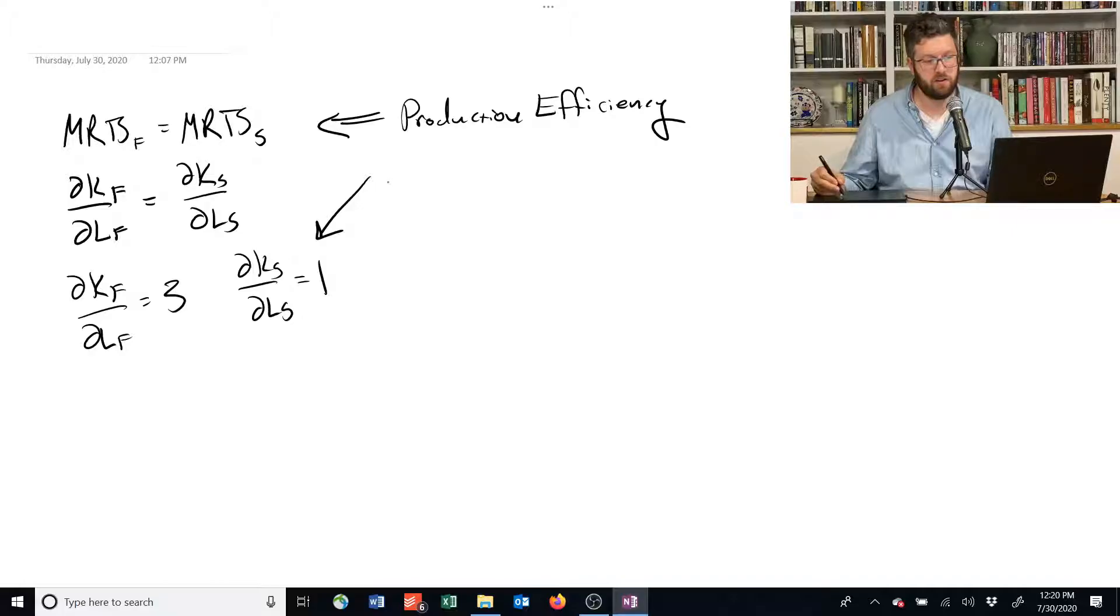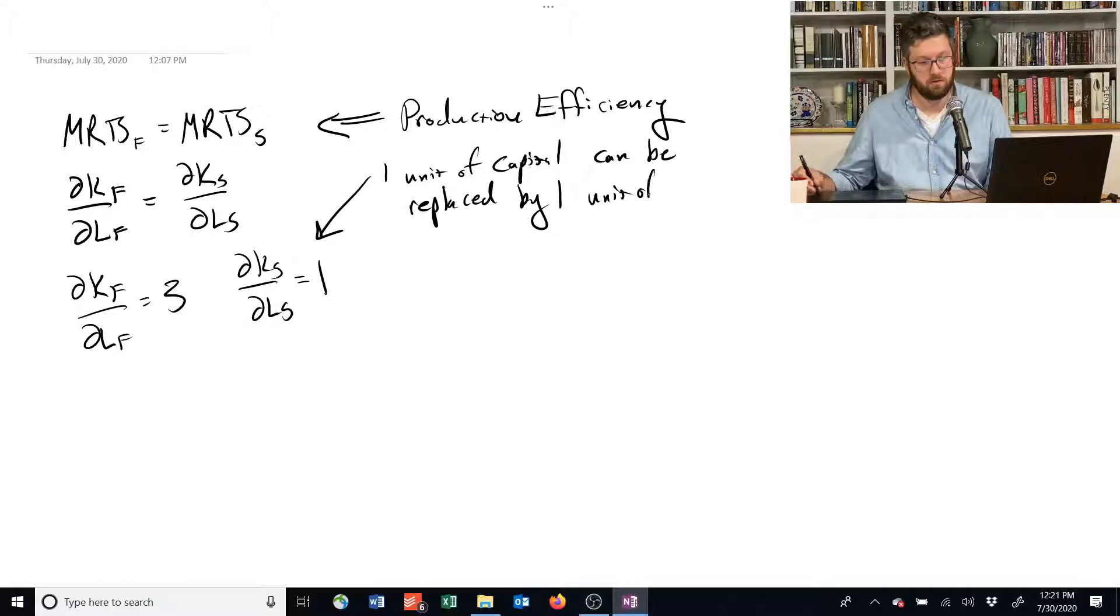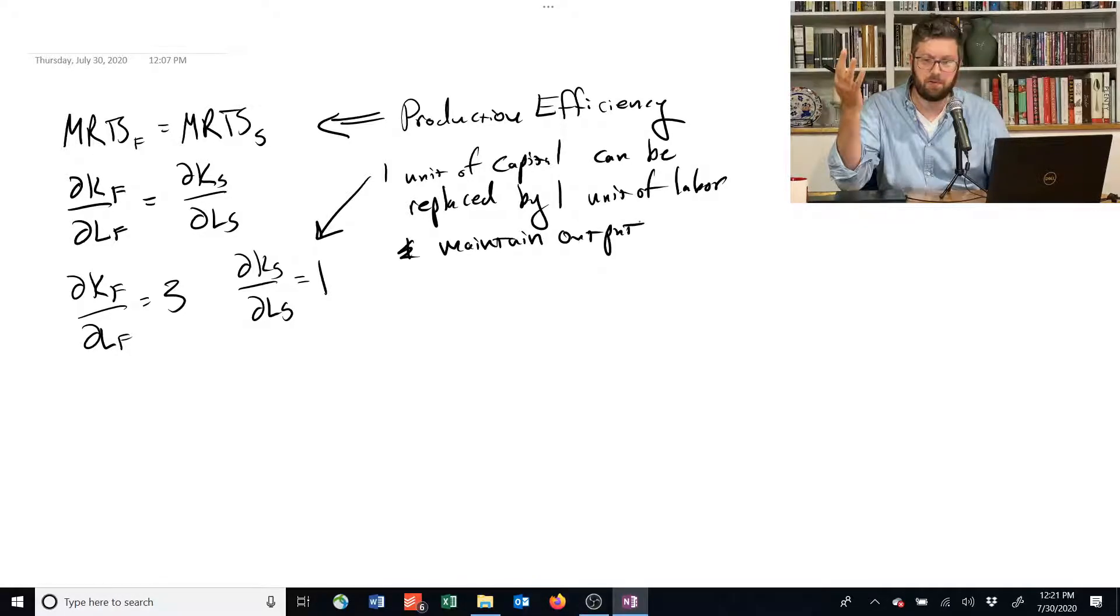This thing over here, when it's equal to 1, is saying 1 unit of capital can be replaced by 1 unit of labor, and vice versa, and maintain output. So to stay on the same isoquant, if I lose 1 unit of labor, I can replace it with capital. If I lose 1 unit of capital, I can replace it with 1 unit of labor.